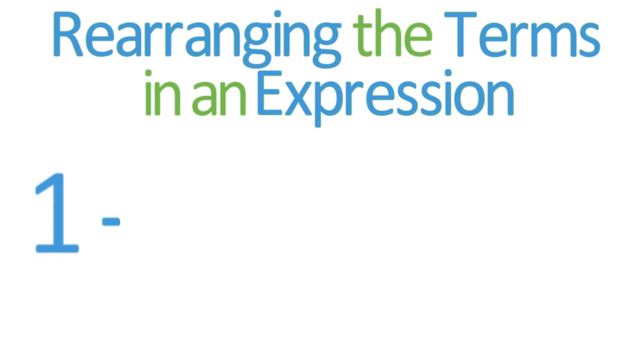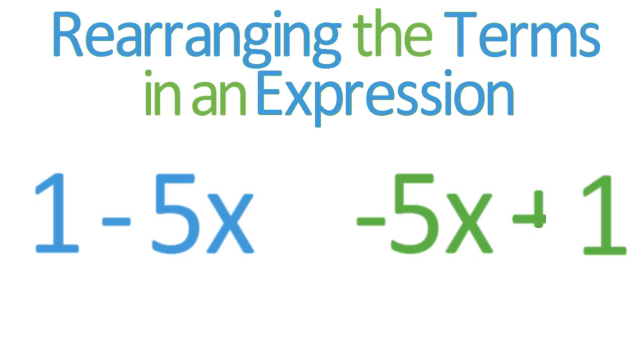consider the expression 1 - 5x. You can rewrite this expression by rearranging its two terms. To complete this rearrangement, place a plus sign in front of the positive term to show that this term is being added to the previous term.